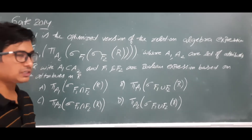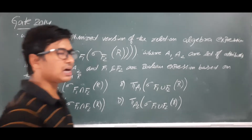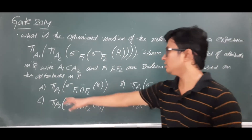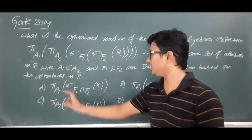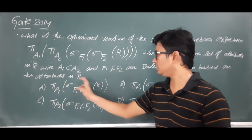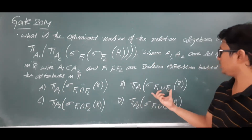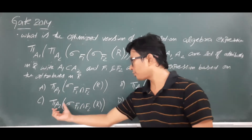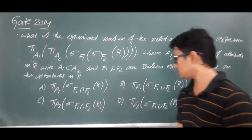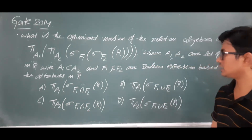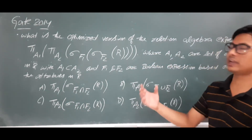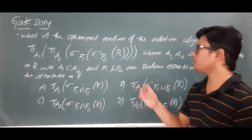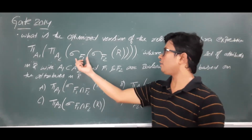They have given four options and are asking which is the correct one. The options involve combinations of projection and selection operators — projection on a1 with selection conditions, and variations using a2.